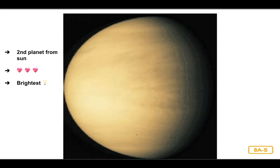Venus is the second planet from the Sun. It is named after the Roman goddess of love. Aside from the Sun and the Moon, Venus is the brightest celestial object that you can see from Earth. Being the brightest object in our night sky makes Venus unique.